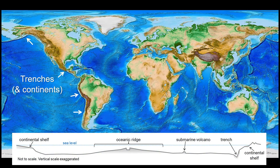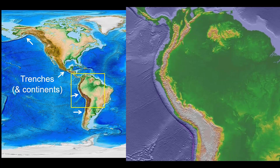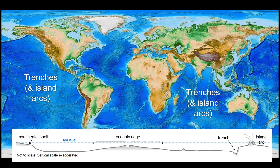The very deepest parts of the ocean are found in narrow trenches, typically along the margins of some ocean basins. For example, we can identify a trench along the western edge of the South American continent. Trenches are also associated with another feature we want to introduce: island arcs.